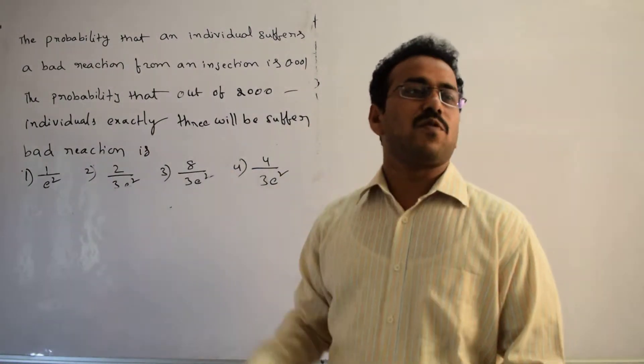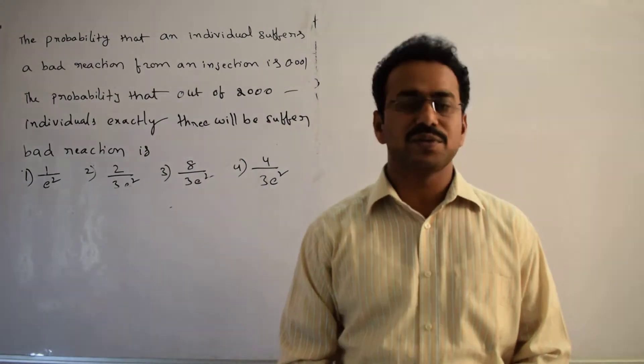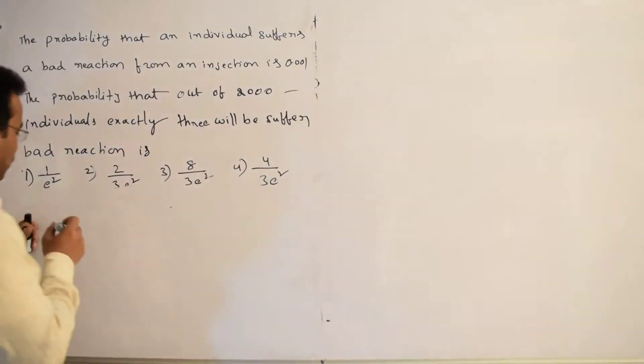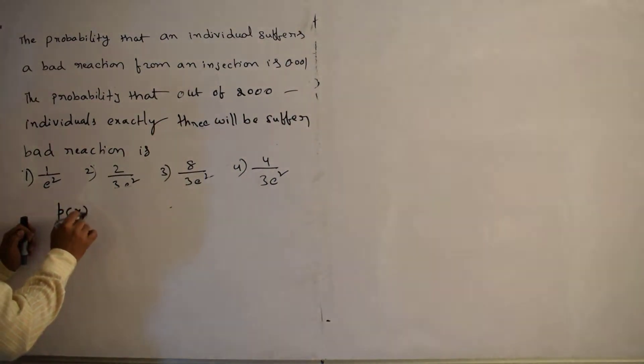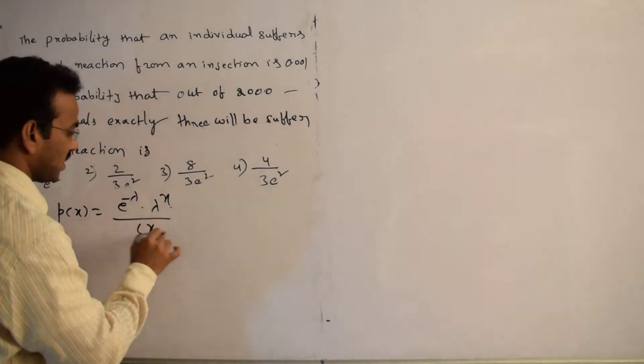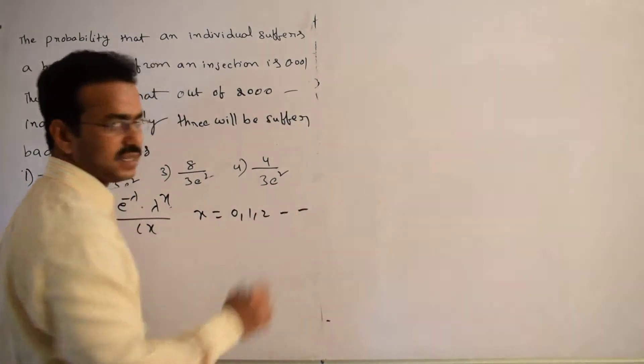So it follows Poisson distribution. Now, we have to use Poisson distribution in the given question. First, let me write the Poisson distribution. Poisson distribution: p(x) equals e power minus lambda times lambda power x by factorial x, where x equals 0, 1, 2, and so on.